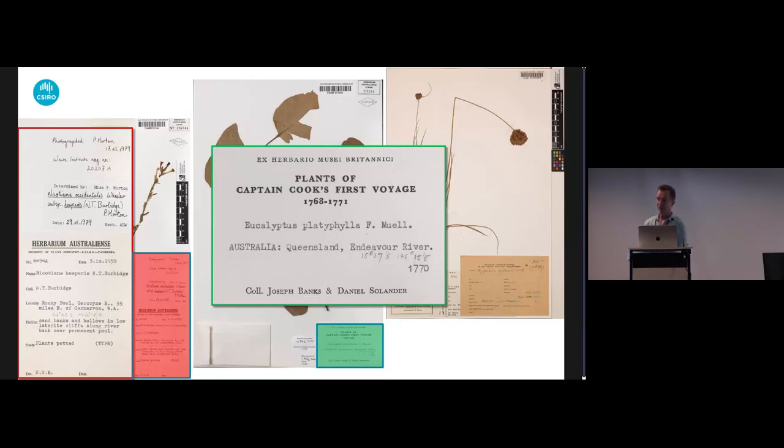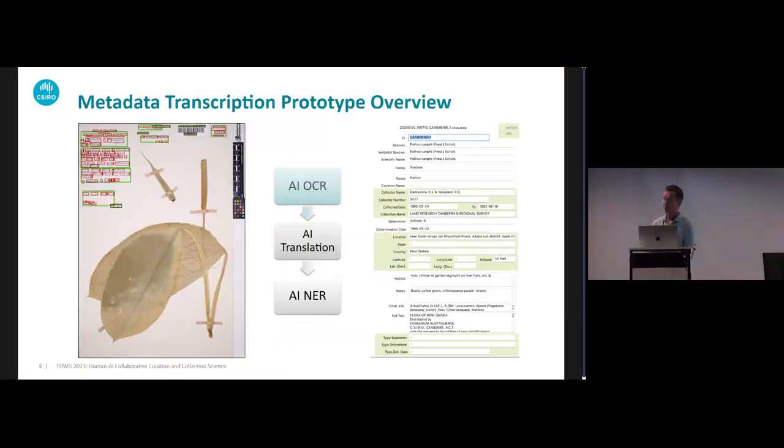Our initial focus has been on developing an application for our collections team to enable improved metadata transcription using AI services and human-AI collaboration. I've been developing this prototype using existing AI models for optical character recognition, translation, and lately using large language models for metadata entity extraction or named entity recognition. Here we see two of the screens: the specimen image showing the bounding boxes around the text items which comes from the OCR process, and the metadata screen on the right showing the entities which have been automatically extracted using the LLM.